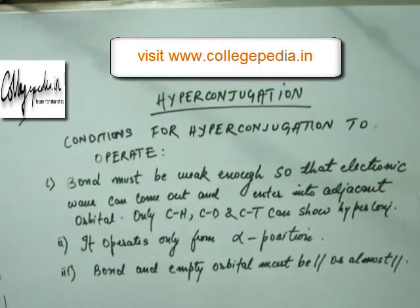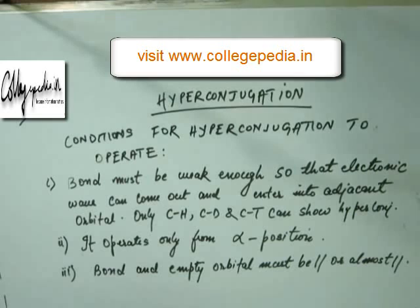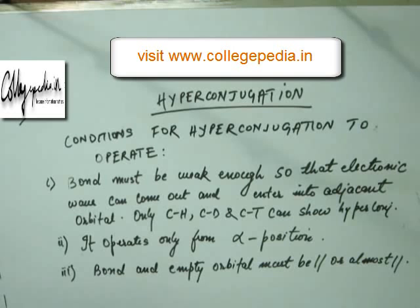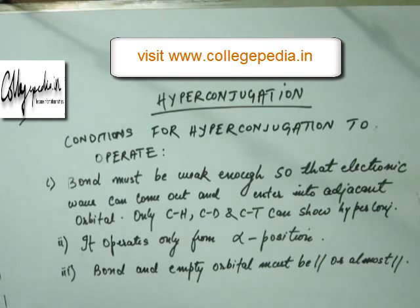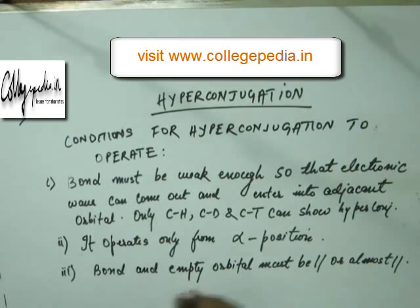Alright, let's boil down what we have studied in the last 10 minutes. We have studied hyperconjugation. We know hyperconjugation is a phenomenon in which sigma bonded electrons come out — slight sigma bonded electron intensity comes out and enters into the adjacent P or pi orbital. Now this phenomenon is hyperconjugation, and we will see its significance and why we are studying this gradually.